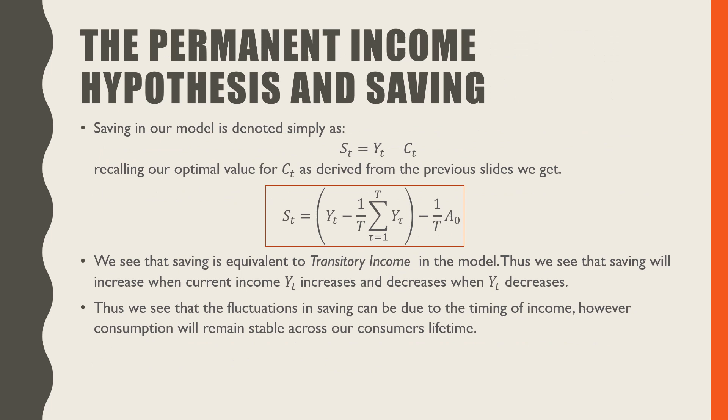Saving in the model is denoted simply as S_t, which is saving at time t equals the income at time t minus the consumption at time t. Recalling our optimal value for C_t derived from our previous slides, we see that our savings is equivalent to transitory income because recall that transitory income is just defined as the difference between Y_t and our permanent income. Thus, we see that saving will increase when current income Y_t increases and decreases when Y_t decreases.